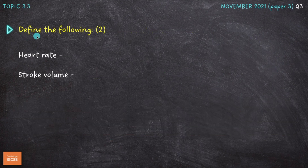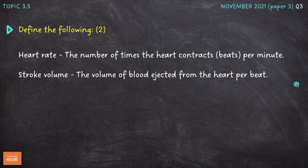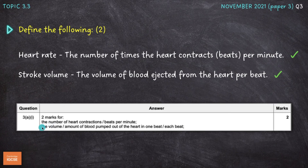Next question: define heart rate and stroke volume for two easy marks. Heart rate is the number of times the heart contracts, or beats per minute. Stroke volume is the volume of blood ejected from the heart per beat — the units would be millilitres. Always a good idea to add additional detail. So heart rate is the number of heart contractions per minute, and stroke volume is the volume of blood pumped out of the heart per beat.